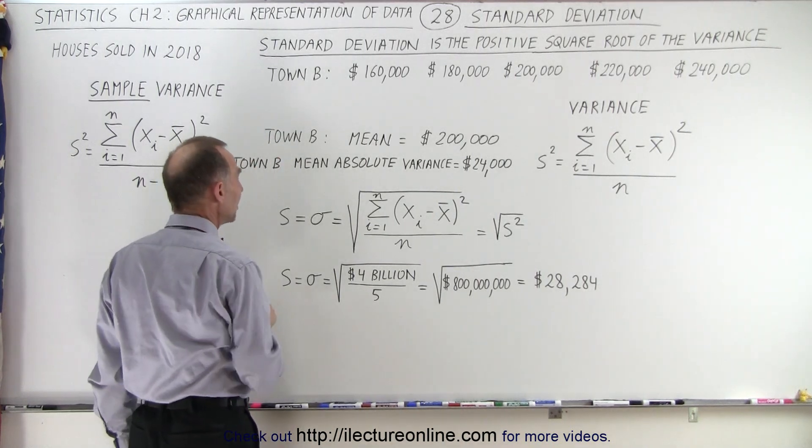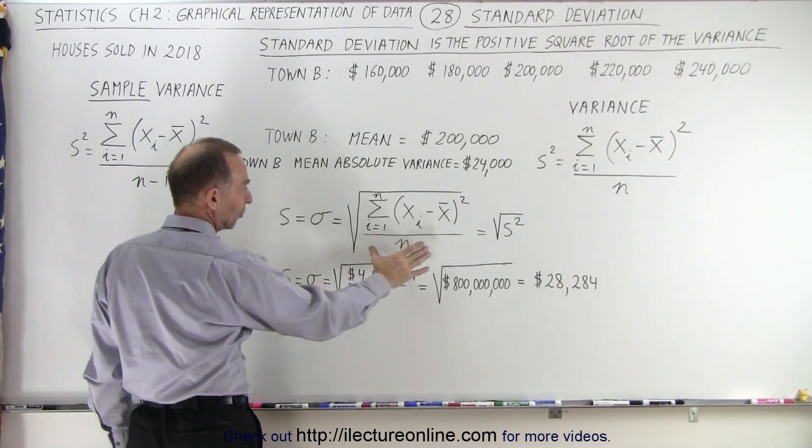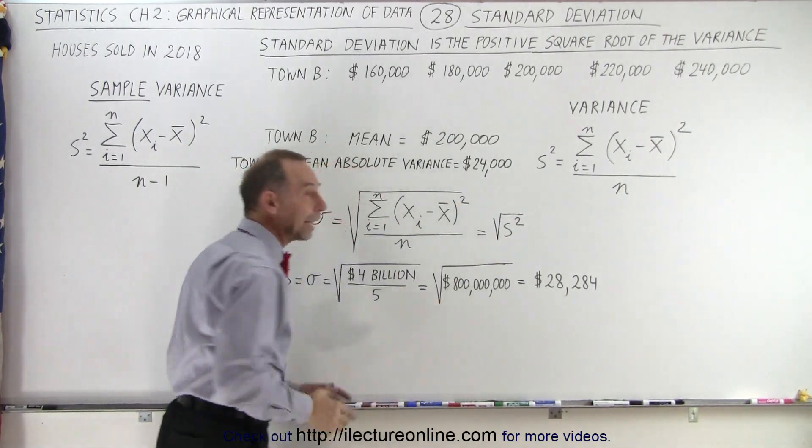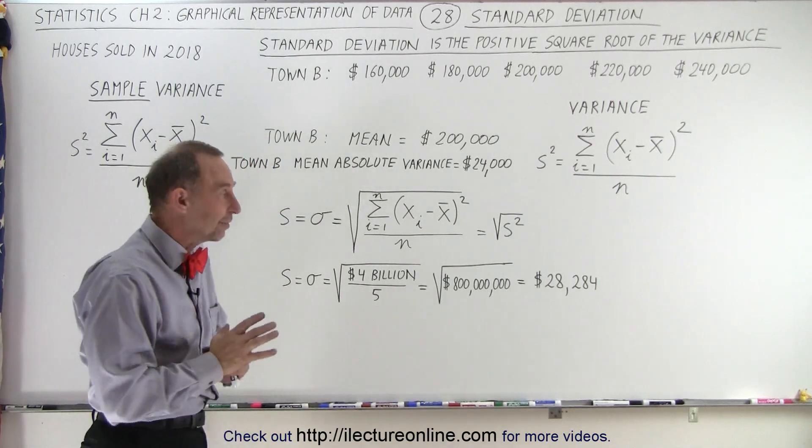Now, to calculate the standard deviation, we take the variance, which is this quantity right here, which is s squared, and we take the square root of that, and then only take the positive value of that square root.